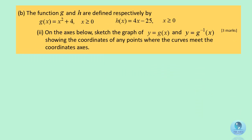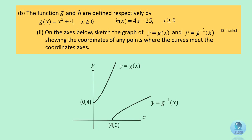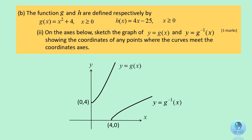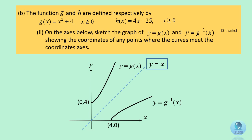First, we draw the graph for y equals g(x), then reflect the graph along the line y equals x, and you get the graph y equals the inverse function of g(x). Remember to plot the intercepts on the coordinate axis.